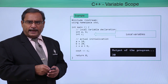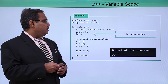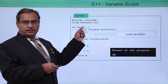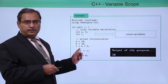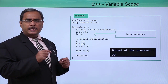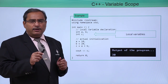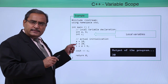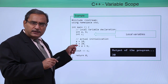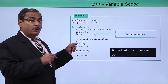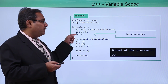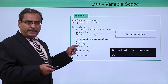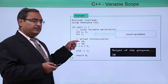Let us go for some examples. In example number 1, within the main function body we have defined variables a, b, and c of type int. Can I access them within the main function? Yes, I can access them. Because they have been defined within this main function and they are being accessed from the same function.